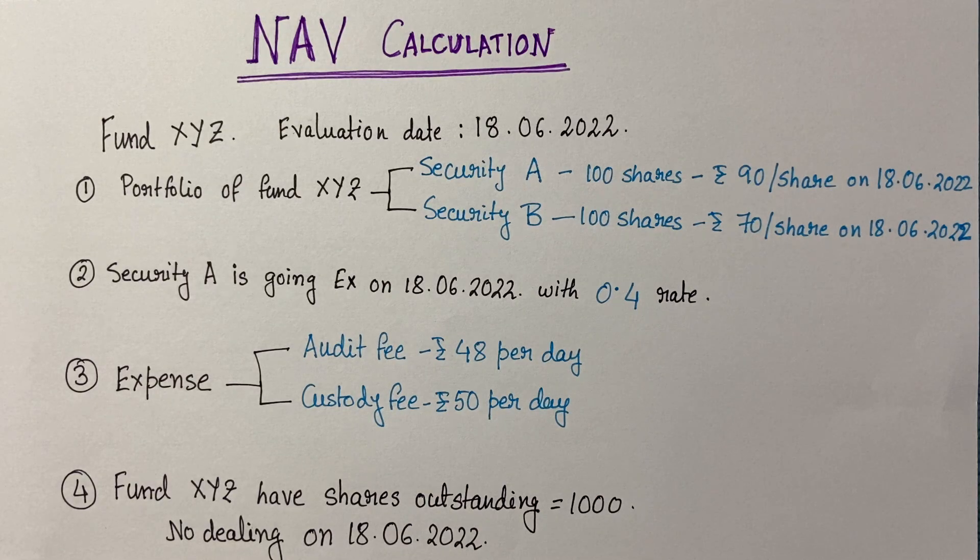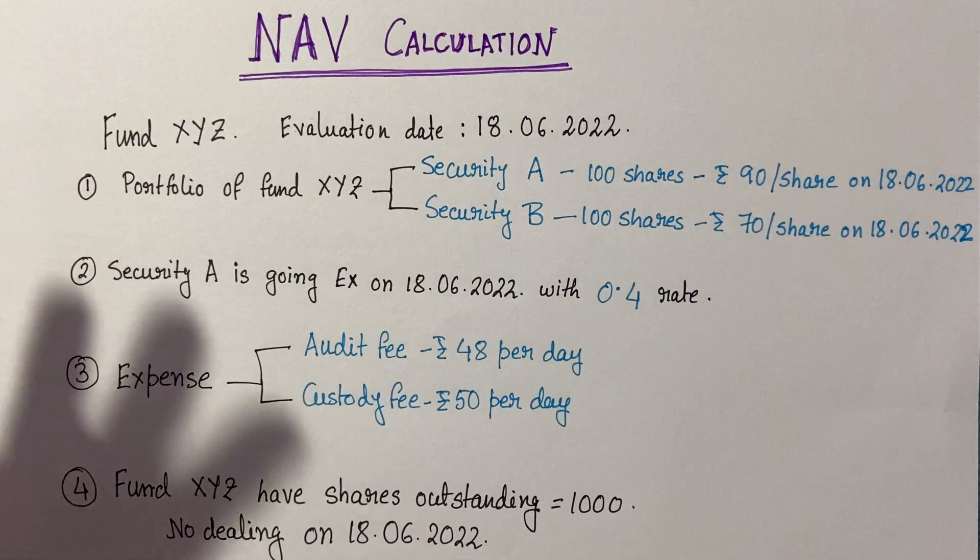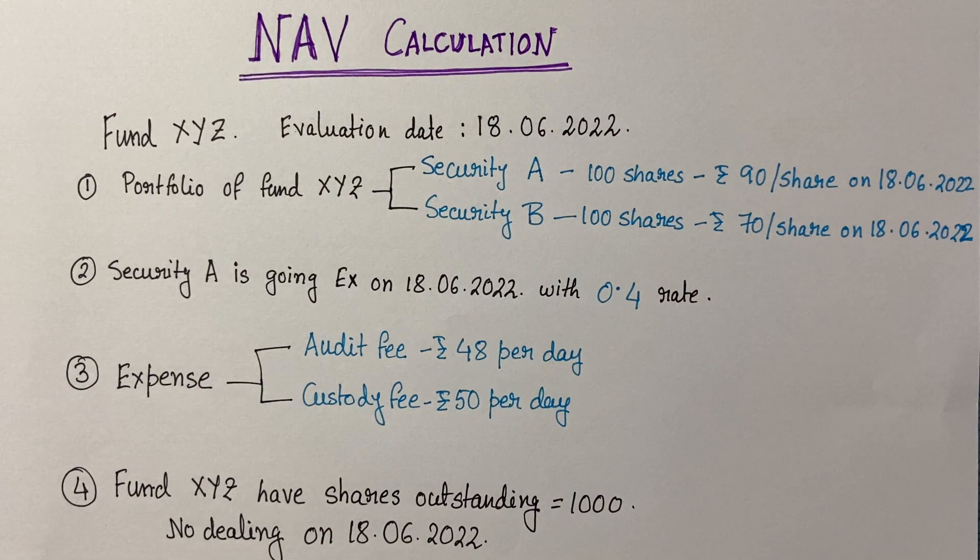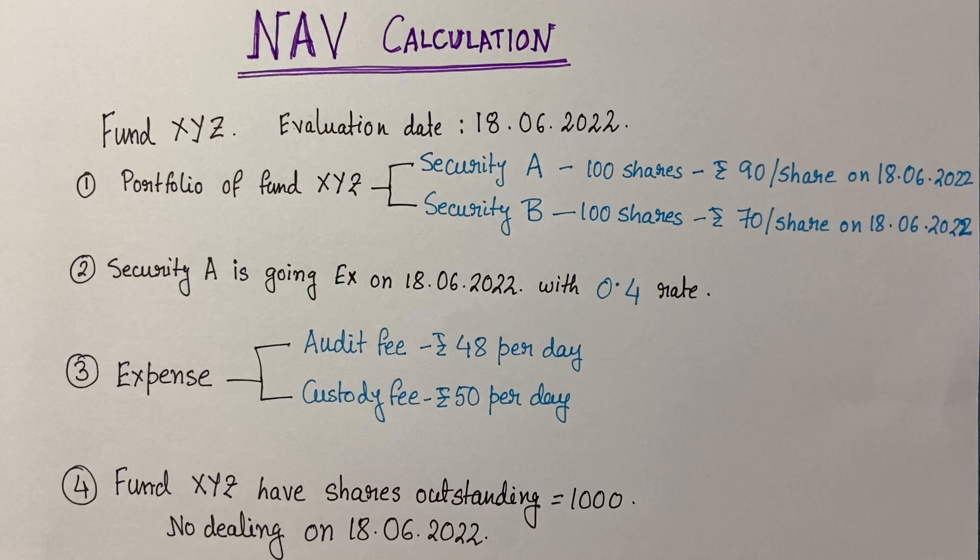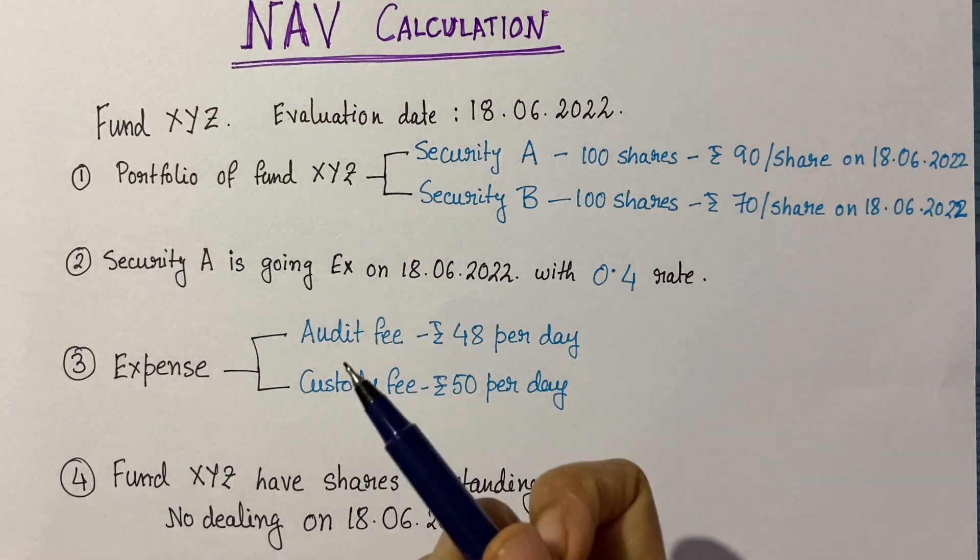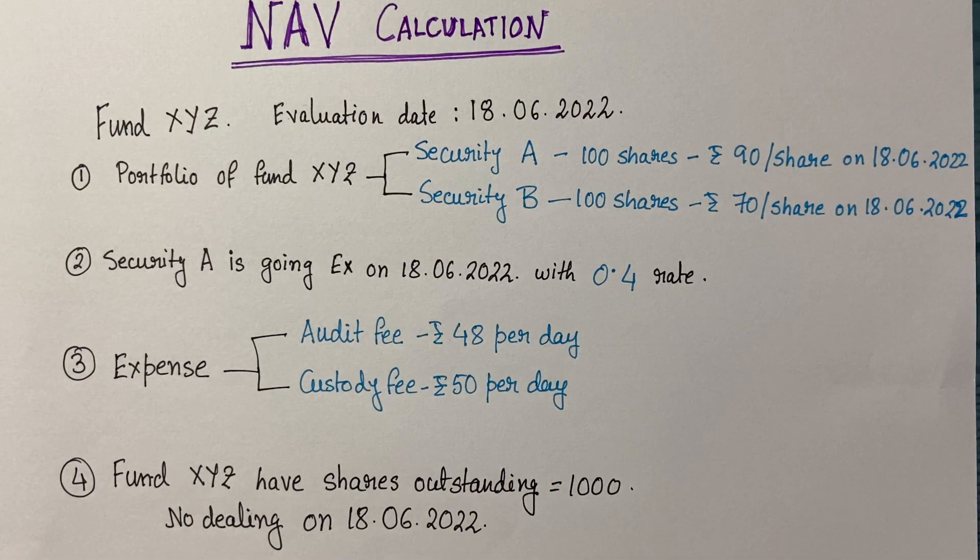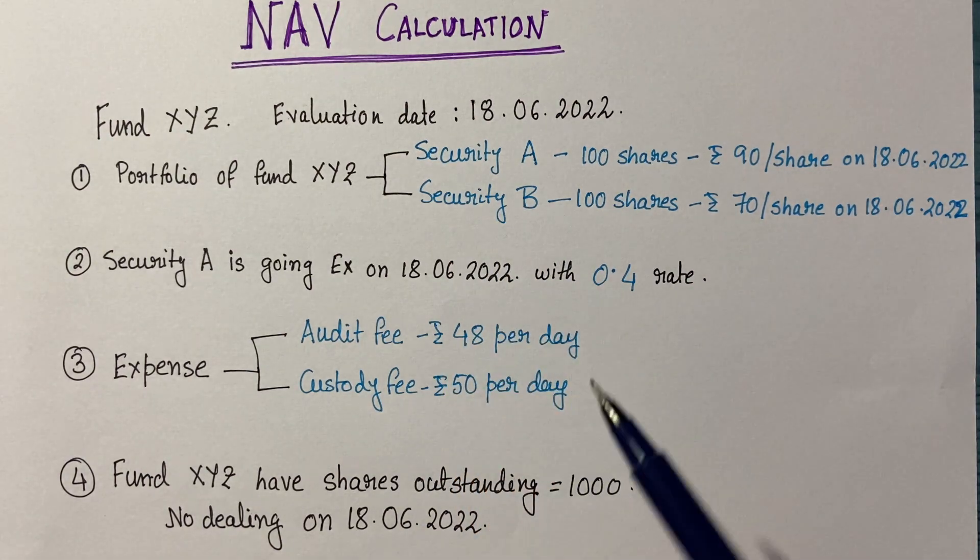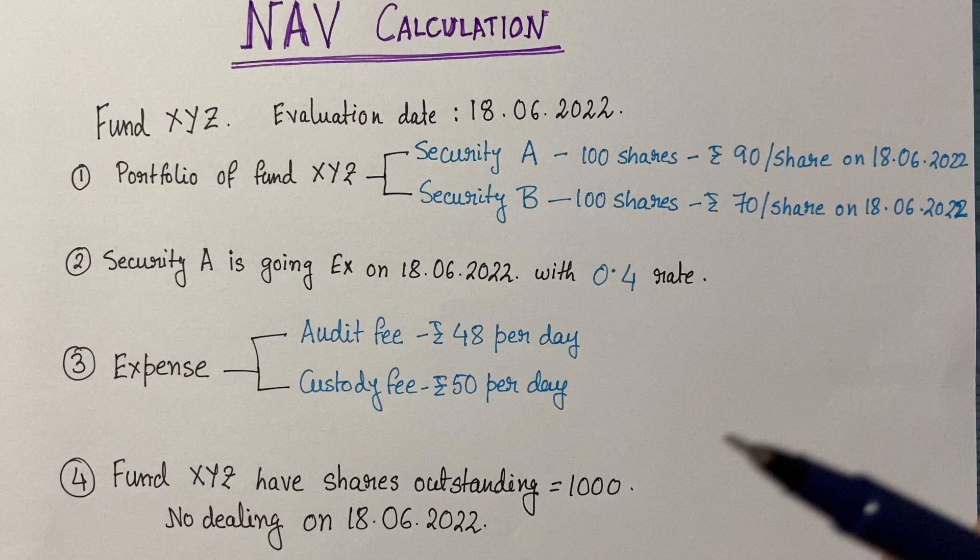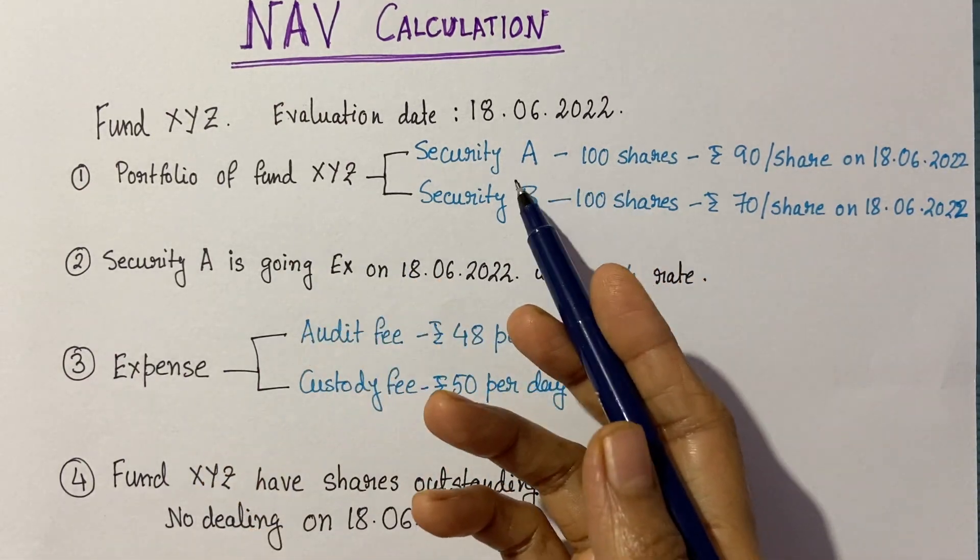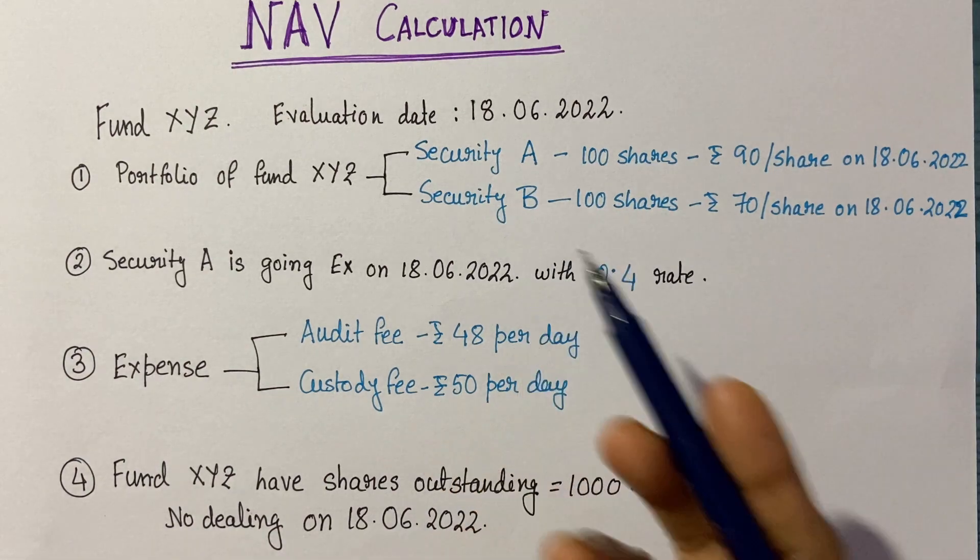Let's take an example of fund XYZ with an evaluation date of 18 June 2022. I've created this very basic portfolio. In fund XYZ, we have only two securities: security A and security B. We're holding 100 shares of each, so fund XYZ holds 100 shares of security A and 100 shares of security B.